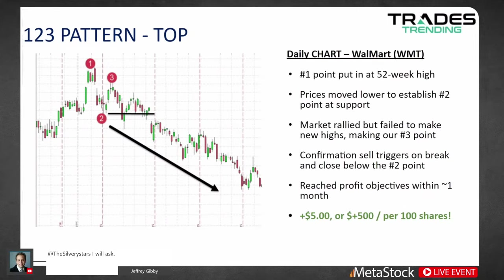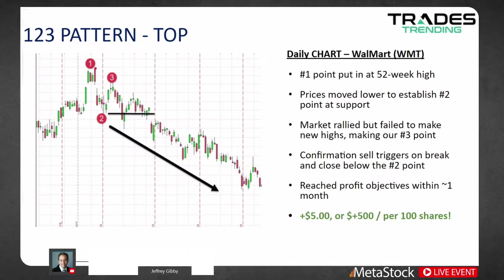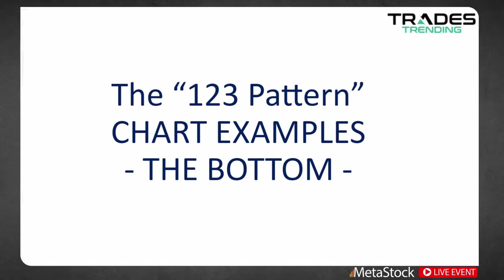Now let's look at a 1-2-3 top pattern on Walmart. On a daily chart, we have a new number 1 because that's a 52-week high. We get a 1-2-3. We know days in advance where we're looking to get in, where we're placing our risk, and where we are looking to place our targets. The distance between the high of the 1 measured to the low of the 2 is about $5 in this example, and you can see we reach our $5 profit objective.